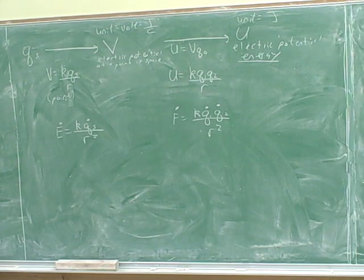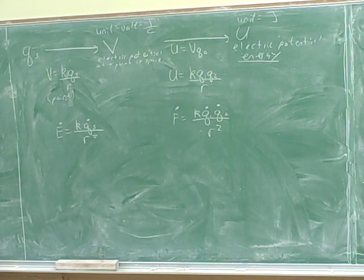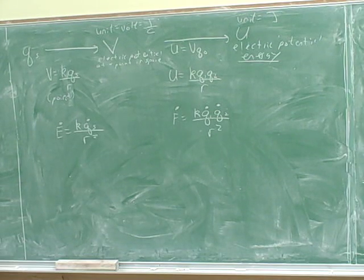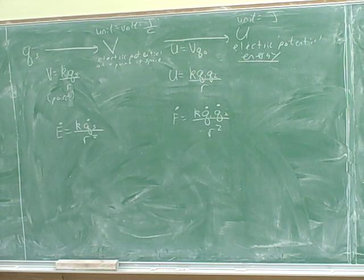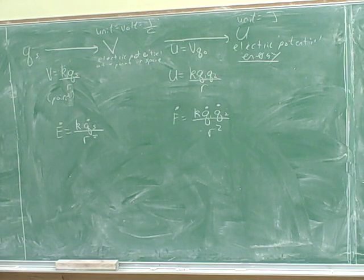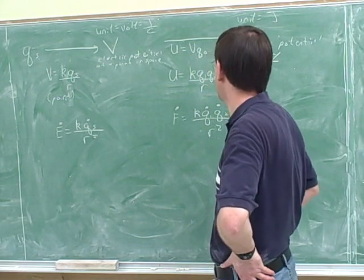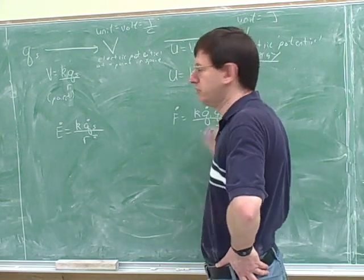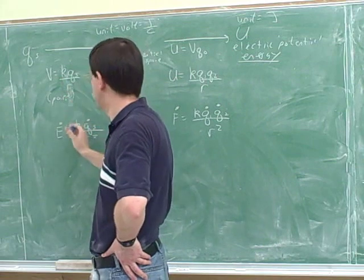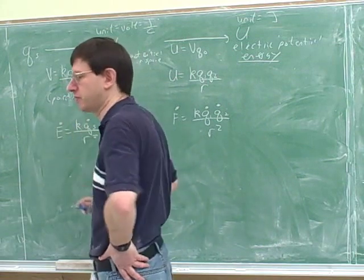If you look at the handout, all of those formulas are there. For example, here's Coulomb's Law for field and here's Coulomb's Law for force. On the other side we have the equations for point charges and potential and point charges and energy. Notice that when we write these formulas, it's typical to call the charges Q1 and Q2, but when you write the field and potential formulas, it's more typical to call them the source charge and the test charge. But it's still the same formulas either way.